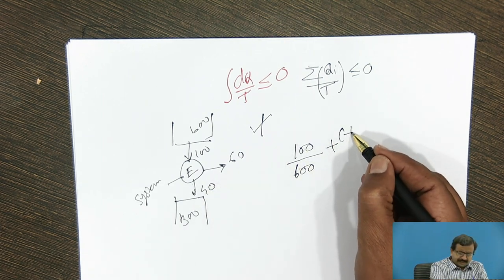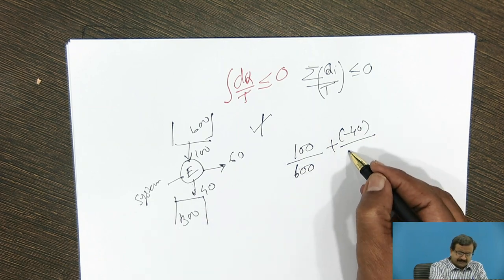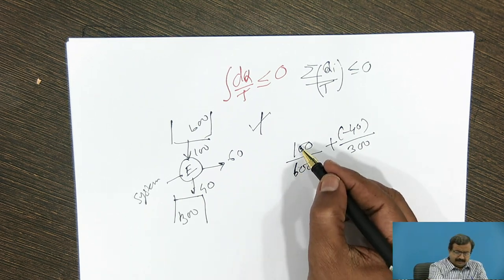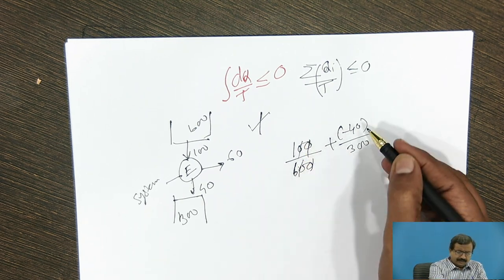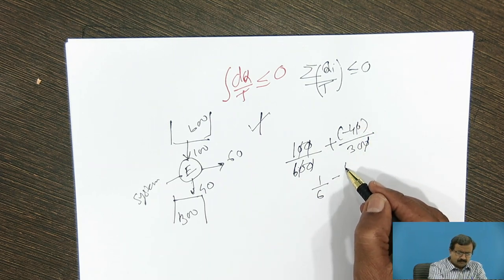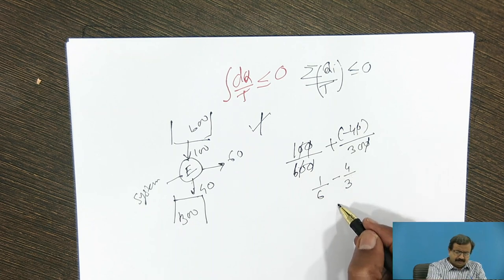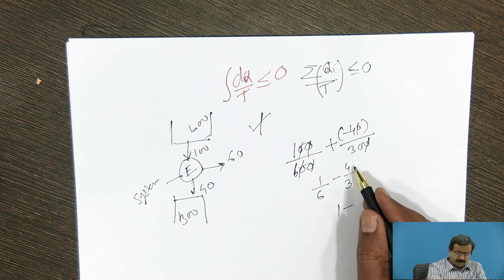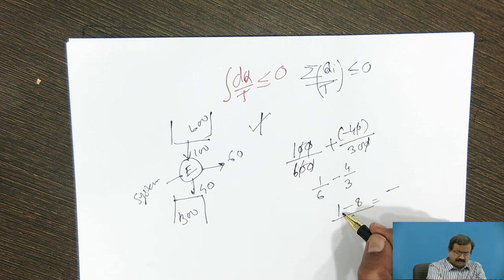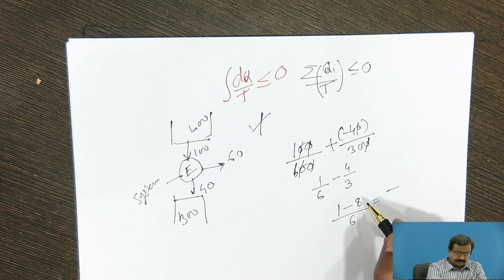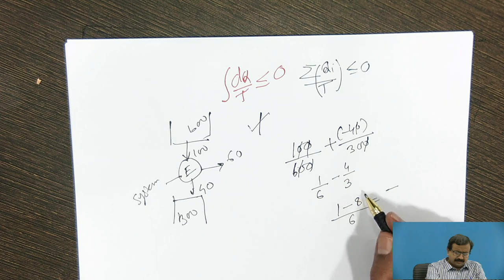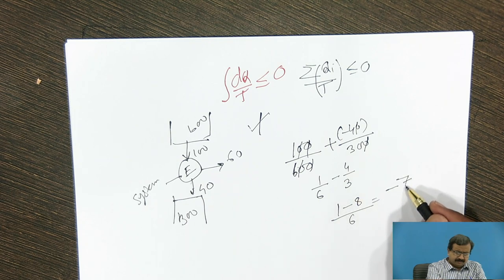It is supplied to the engine at what temperature? 600. Plus, now 40 is the heat rejected by the engine. And at what temperature it is rejected? 300. Right? Now what has happened? So if I go by these calculations, you will find that this is 1 by 6 minus 4 by 30. So answer will be 1 minus, you can multiply by 2 here, 8 upon 6. So it becomes minus 7 by 6.